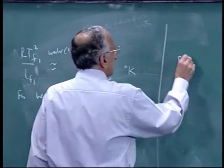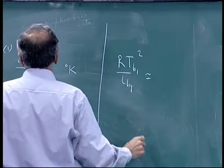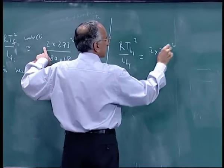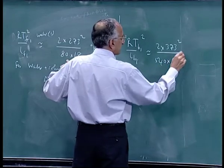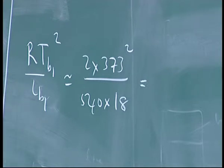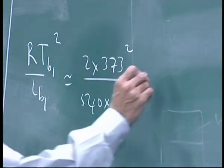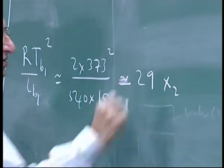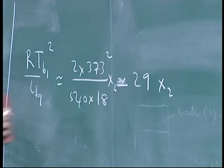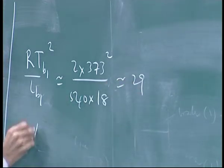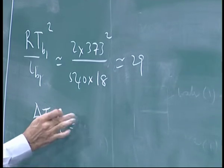So this is now called boiling point elevation. So again I get, I have to evaluate R Tb1 squared by Lb1. For water this will be 2 into 373 whole square, boiling point. This 80 is now 540 into 80. Can you do that for me? 373 square. This is 540 calories per gram. What? 29 approximately. 29 into x2. This is 540 calories, no, no, this is sorry, this is just 29. Then I have delta T boiling point elevation is equal to 29 into x2.